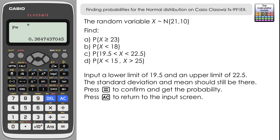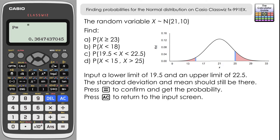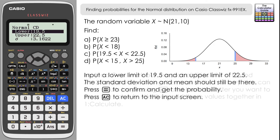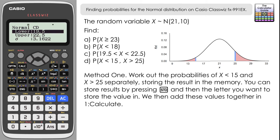Part d is a little bit tricky — I'm going to show you two ways to approach it. Because we have two separate regions, some calculation is involved. I'll store results from distribution mode into memory and use Calculate to work that out. Press AC to go back to the input screen. For method one, I'll work out each region separately, store the two probability values in calculator memory, then add them together in Calculate mode. First, the probability of being less than 15: use a lower limit of minus 9 × 10⁹⁹ and an upper limit of 15.